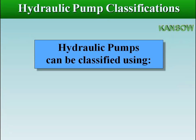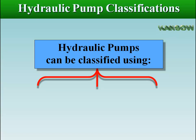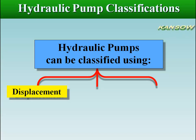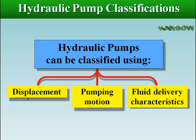Hydraulic pumps can be classified using three basic characteristics: displacement, pumping motion, and fluid delivery characteristics.